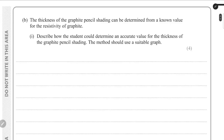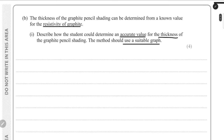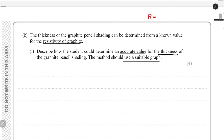Now for part B, we are told that the thickness of the graphite pencil shading can be determined from the resistivity of graphite, which is a known value. We have to describe how to find an accurate value for the thickness using a suitable graph. The formula for resistance using resistivity is R = ρL/A, where ρ is the resistivity, L is the length of the conductor, and A is the cross-sectional area.